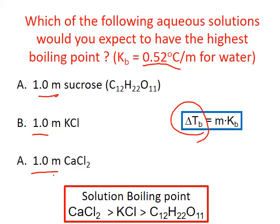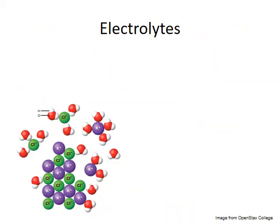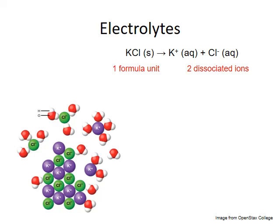The answer is that potassium chloride and calcium chloride are electrolytes — soluble ionic compounds — and how they dissolve is significantly different from the non-electrolyte molecular compound sucrose. Potassium chloride is made up of two types of ions: positively charged potassium and negatively charged chloride. In solid form, these ions form a crystal lattice, and each formula unit consists of one potassium and one chloride ion. When the solid dissolves in water, the ions dissociate into separate particles, so for every one formula unit that dissolves, we form two particles.